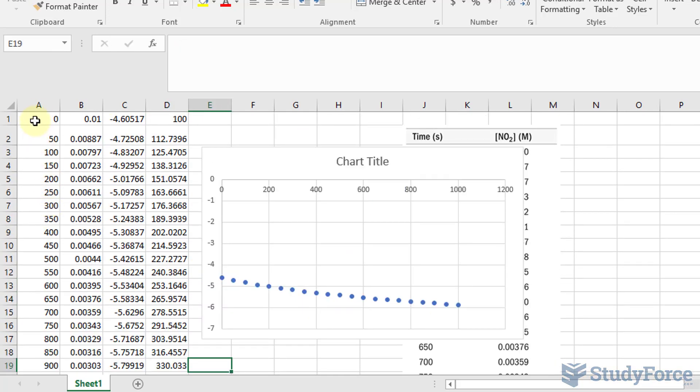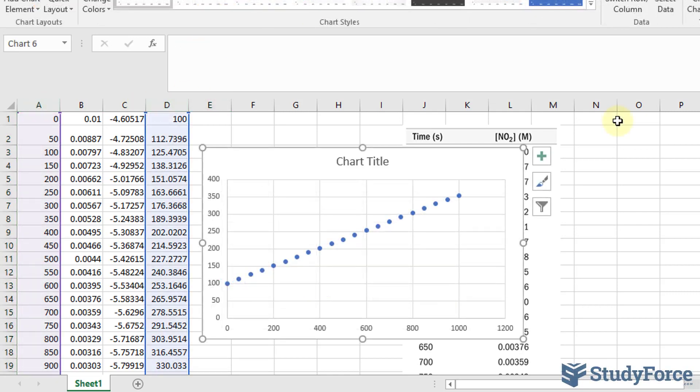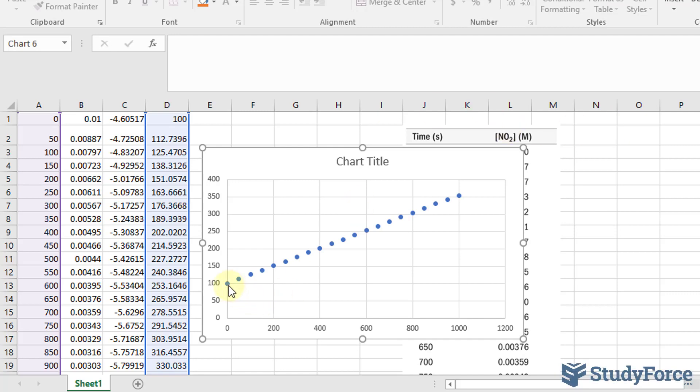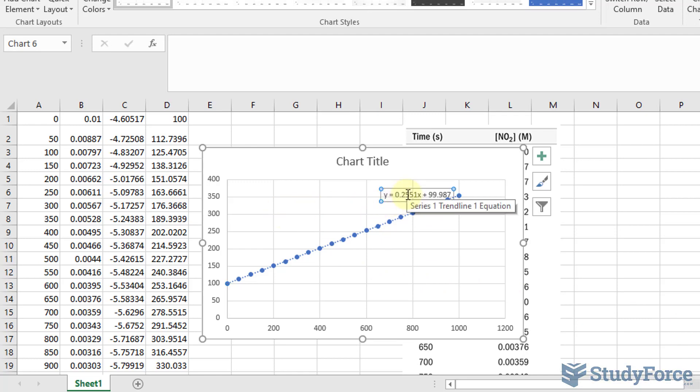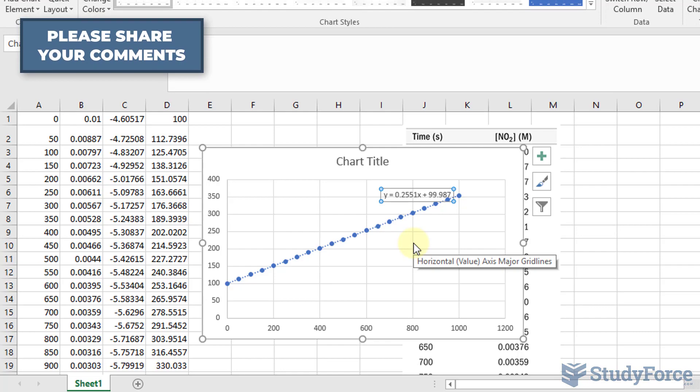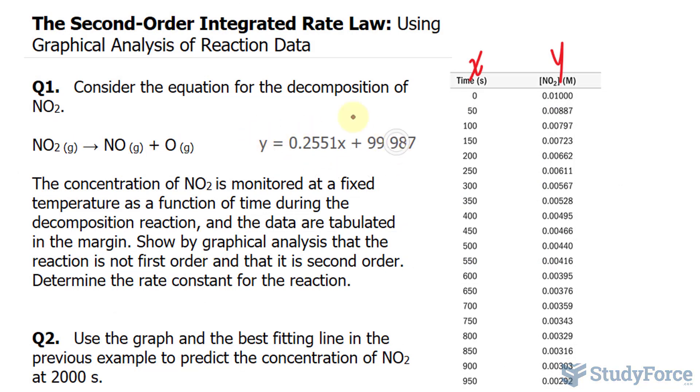Now let's compare column A and D. Notice that this gives us a graph that is more straight. So I'm going to approximate this with a straight line, and you can do that by adding a trend and then subsequently displaying the equation. The equation looks like this, where we have y = 0.2551x + 99.987. There you go. I've recorded it nice and clearly right here.